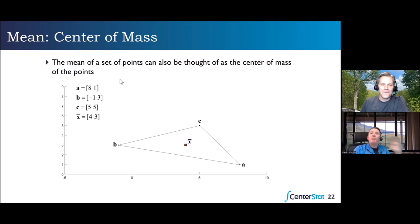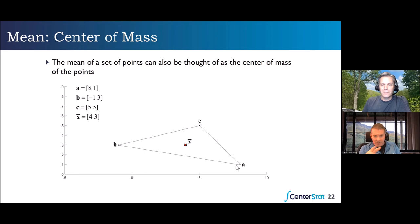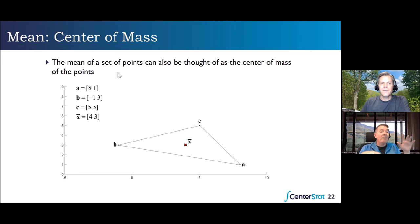Patrick adds: if you're new to seeing vectors in a geometric representation, once you think about X-bar as the center of mass, you can ask: how far are A, B, and C away from that centroid? Are some vectors closer, some farther apart? Maybe one vector is really far away — is that an outlier? Maybe you have a whole boatload of vectors that cluster around one centroid, but others center around another. That starts making you think about cluster analysis — one center of mass, or multiple centers of mass?